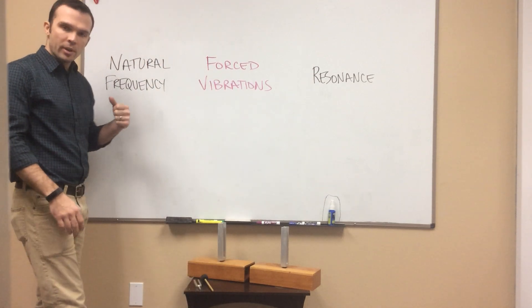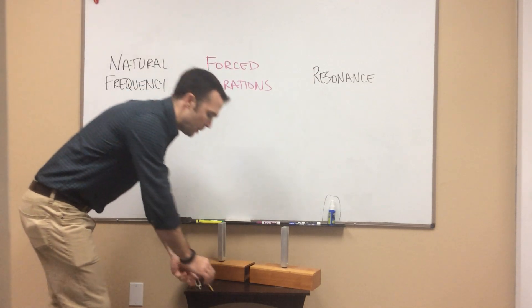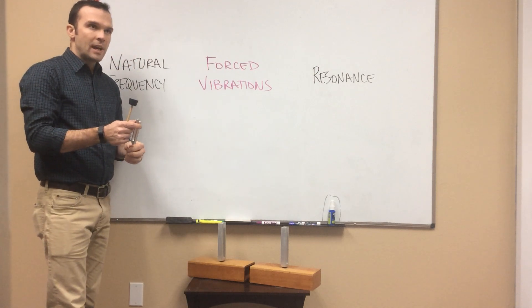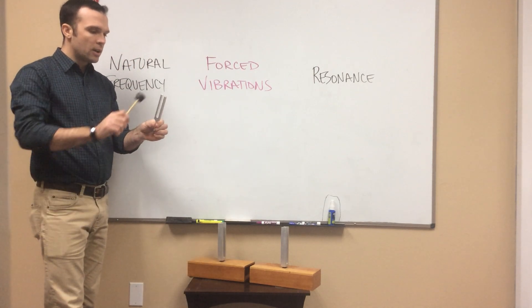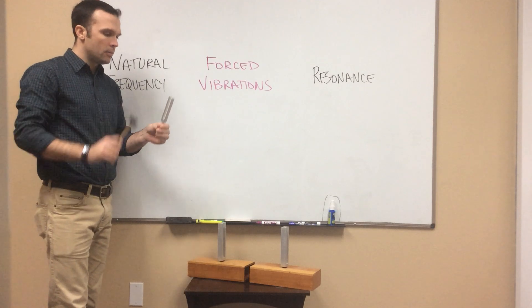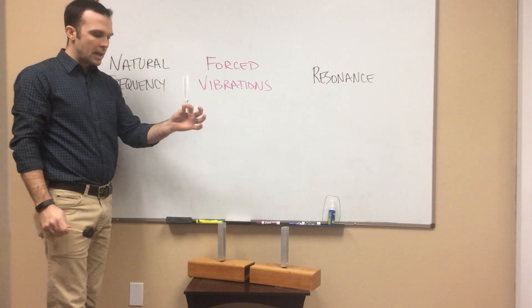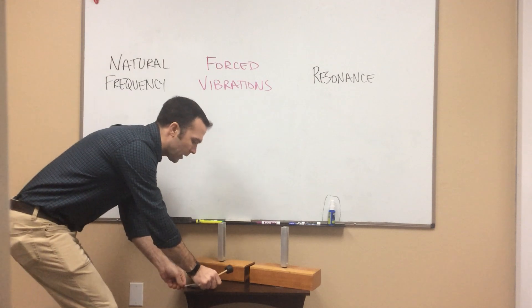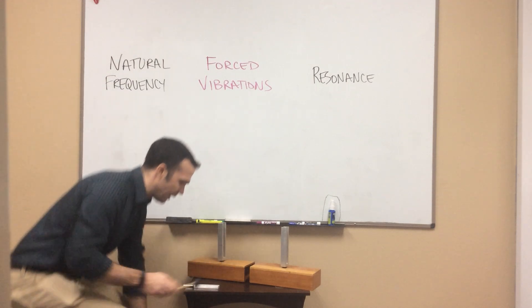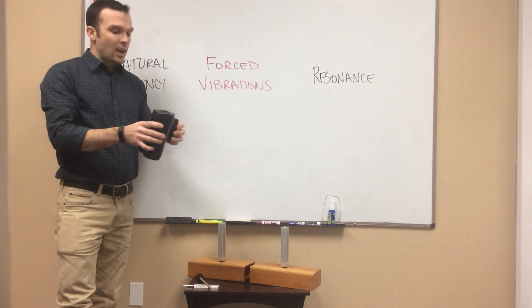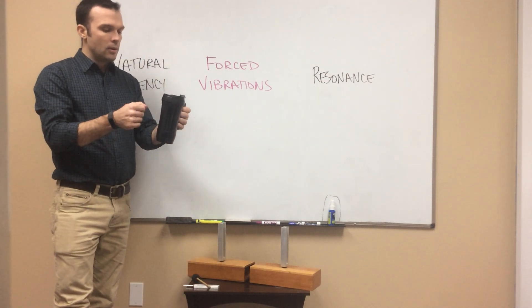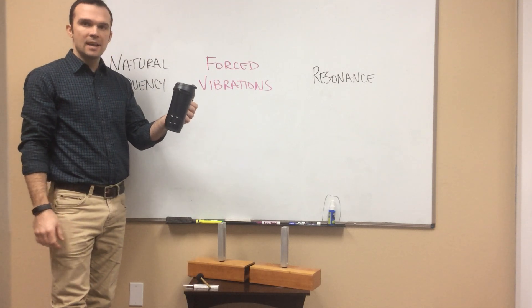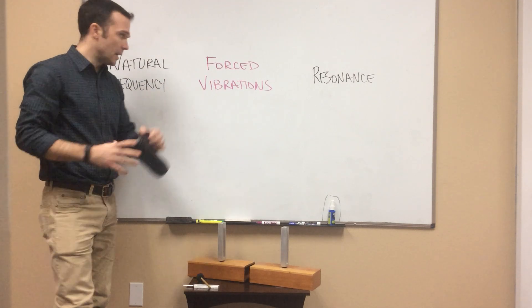Natural frequency is a pretty simple idea. It's basically that when you strike an object, it will have its own natural frequency. So this tuning fork, if I strike it with a rubber mallet, has that particular natural frequency. If I pick up something different, like — I know this seems goofy — but like a coffee cup, that sound you hear when I flick it, that's its natural frequency.